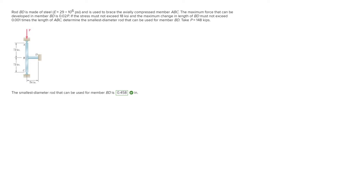For this problem we're trying to find the smallest diameter rod that can be used for member BD. Rod BD is made of steel with a modulus of elasticity of 29×10⁶ psi. The maximum force that can be developed in member BD is 0.02 times P. The stress must not exceed 18 ksi, the maximum deformation must not exceed 0.001 times the length of ABC, and P is equal to 148 kips.